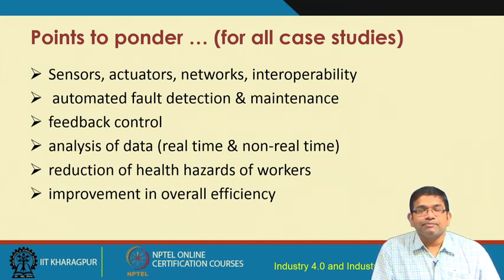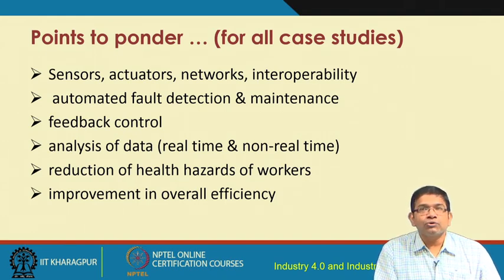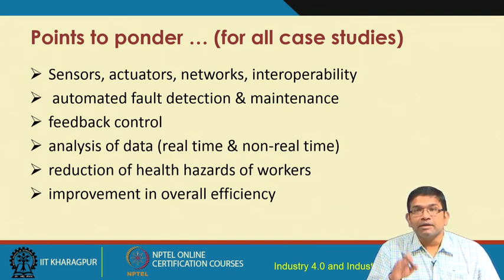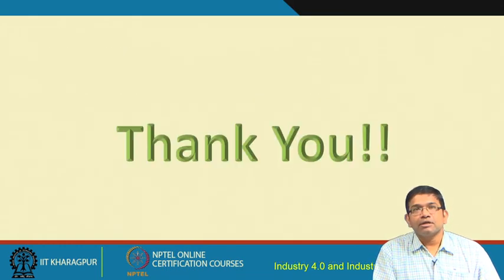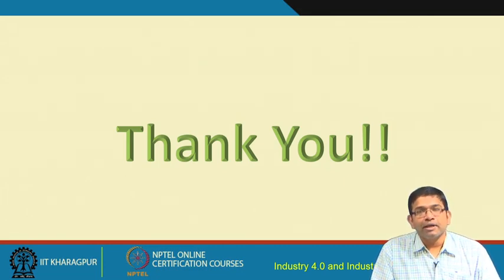Feedback control is very important — without it, you are not going to improve existing processes autonomously. Proper feedback control must be in place. Analysis of both real-time and non-real-time data, along with analytics, is core to Industrial IoT. Also consider reduction of health hazards for workers and improvement in overall efficiency. These are the different attributes you should think about when analyzing the cases we are going to present. With this, we come to an end — take up each case and think about the points to ponder listed in this lecture. Thank you.